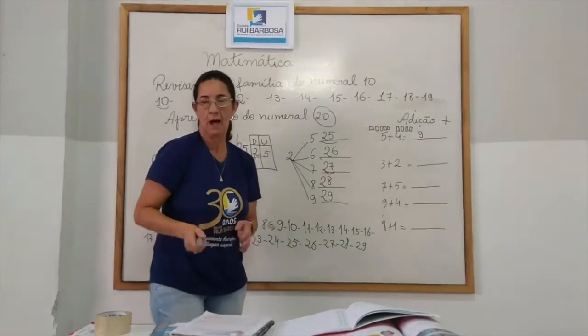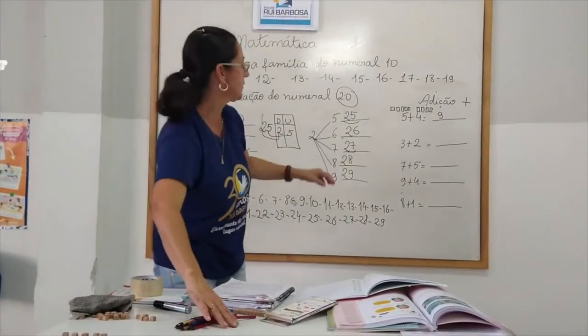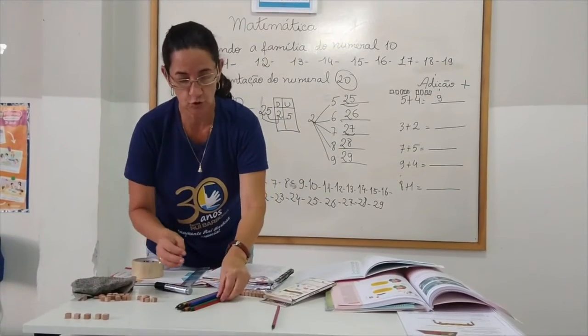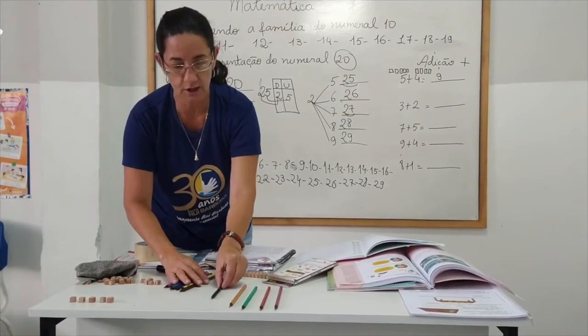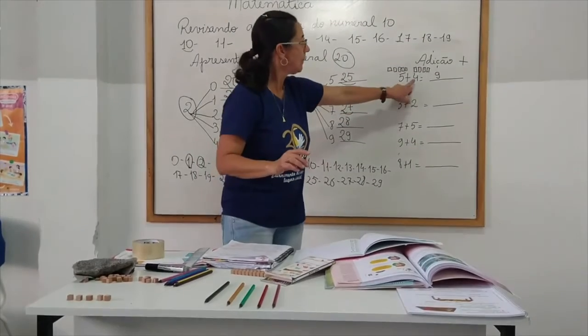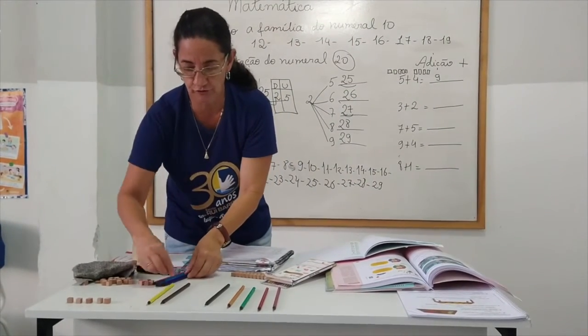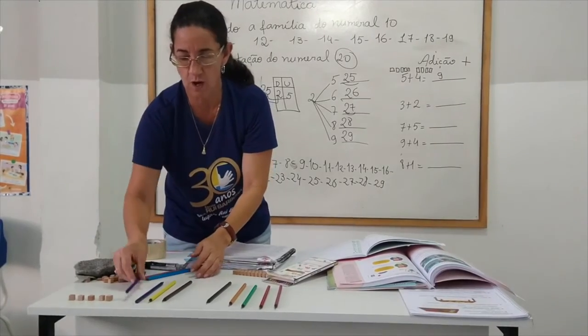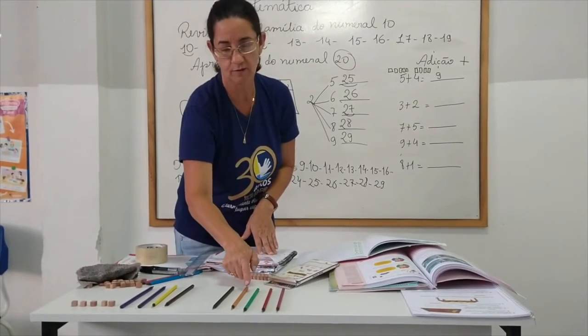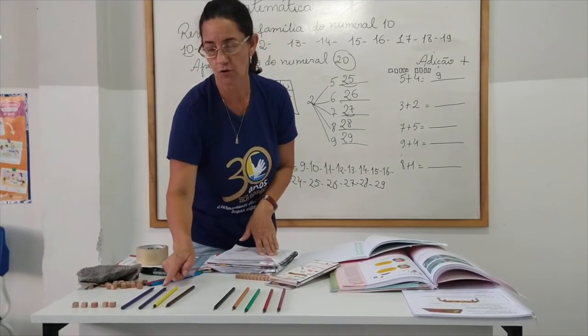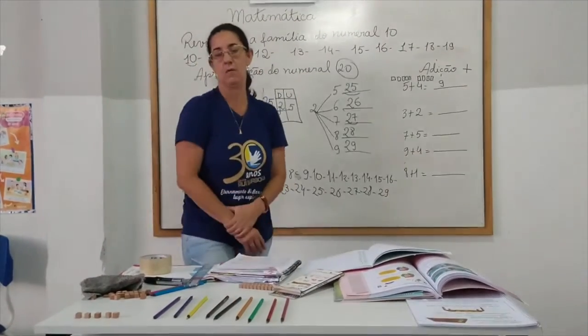Eu também posso pegar lápis, né? Posso pegar os lápis. Aqui eu tenho, ó, melhor 5. Então, 1, 2, 3, 4, 5. 5 mais quanto? Mais 4. Vou colocar aqui, ó. 1, 2, 3, 4. 5 lápis mais 4 lápis. 1, 2, 3, 4, 5, 6, 7, 8, 9. 5 lápis mais 4 lápis é igual a 9 lápis. Ok?